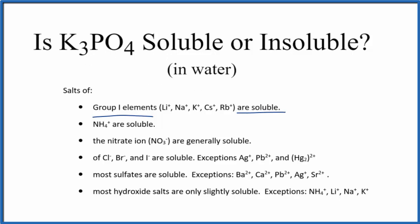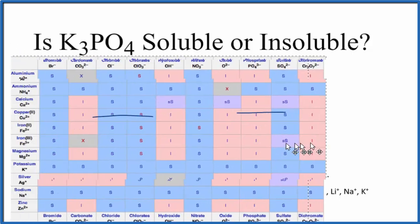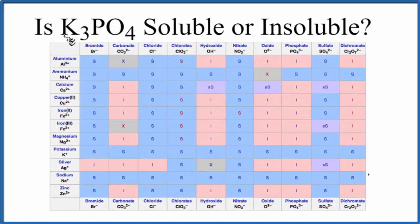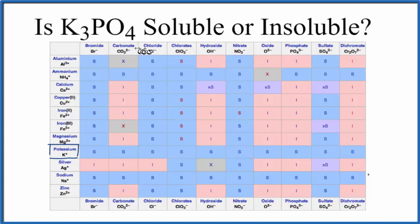We could also use a solubility chart. As we go down our list, here are the positive ions. We find potassium, K+, and then across the top are the negative ions — the anions. We have phosphate, PO4 3-.